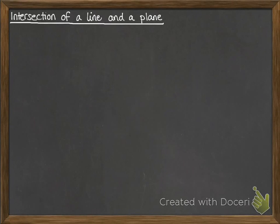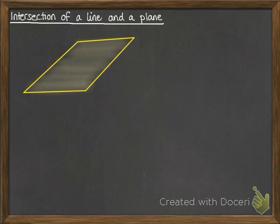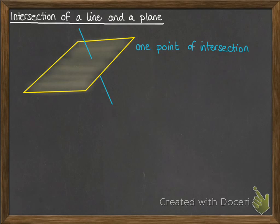You've done plenty of things that look at the intersection of two lines. This time we're going to look at the intersection of a line and a plane. We could have a plane like this, and a line that could go through the plane — that's one possibility, and we'd have one point of intersection.